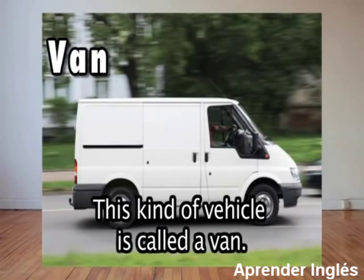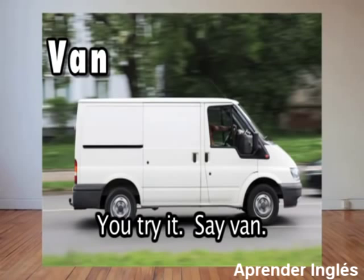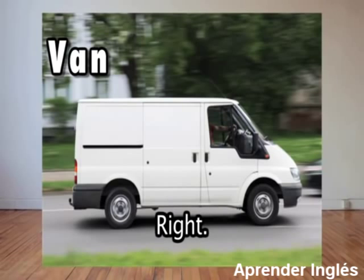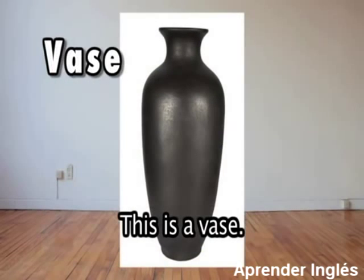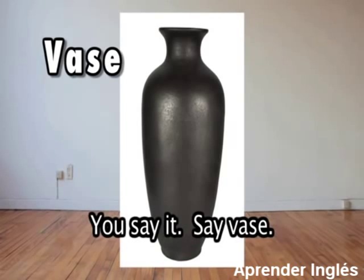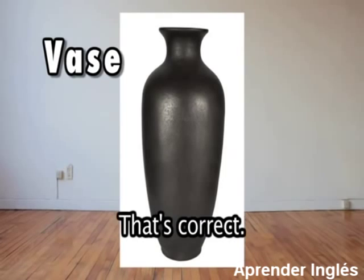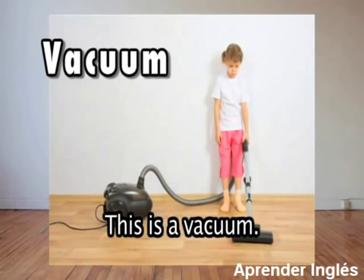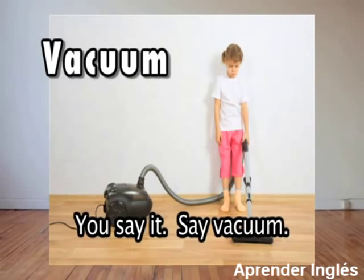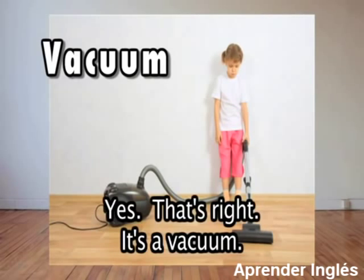This kind of vehicle is called a van — V-a-an. You try it, say van. Again, van. Right. This is a vase. Vase. Vase. You say it, say vase. Again, vase. That's correct. This is a vacuum. Vacuum. You say it, say vacuum. Again, vacuum. Yes, that's right. It's a vacuum.